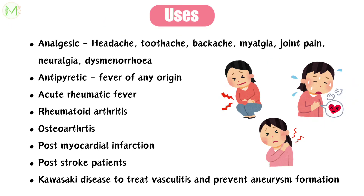Now let's look at the various uses of aspirin. Mainly they are used as an analgesic — a painkiller — for headache, tooth pain, back pain, muscle pain, joint pain, muscle pull, neuralgias, and dysmenorrhea. It is also used as an antipyretic drug to treat fever of any origin, though paracetamol is safer and generally preferred for fever. It is also used for acute rheumatic fever, rheumatoid arthritis, osteoarthritis, post-myocardial infarction, post-stroke patients, and in Kawasaki disease to treat vasculitis and to prevent aneurysm formation.